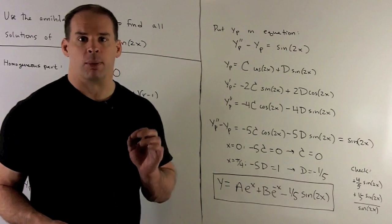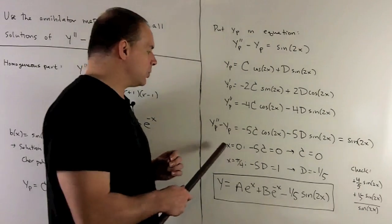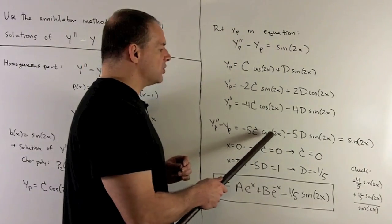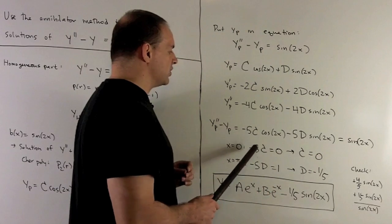If you want something more concrete, you pick points carefully. So, first, I can let x be equal to zero. Cosine of zero is one, sine of zero is zero, so we're just going to have minus 5c equals zero.